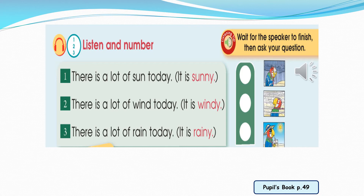After we listen, let's number the pictures. Number one: there is a lot of sun today — it's sunny, that's number one. Number two: there's a lot of wind today — it's number two. Number three: there is a lot of rain today — it's the first one.